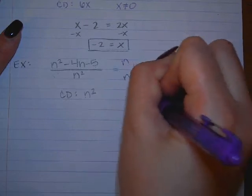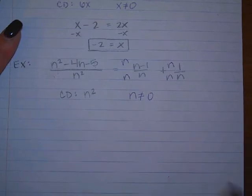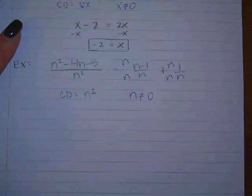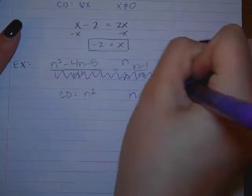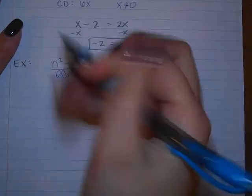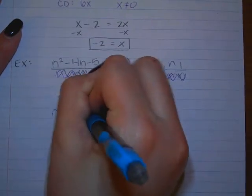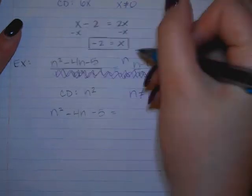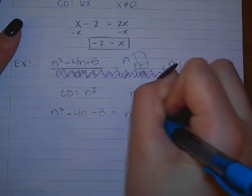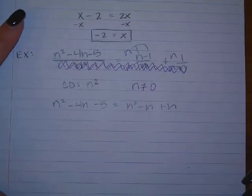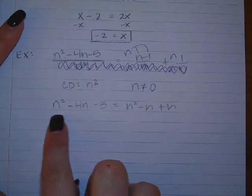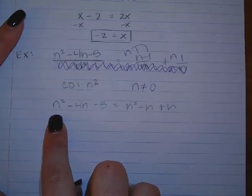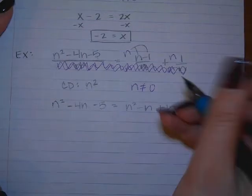What is our excluded value? Zero. We can't have zero, so as long as we have anything else, we're good. And what do I do now? Yeah, get rid of the denominators. Okay, so I have N squared minus 4N minus 5 equals what? N squared minus N. Okay. Should we go ahead and start factoring this side because I can see that it's factorable? No. No. Why not? When do you start factoring something? When it equals zero, which it does not. Okay, so please don't do that.